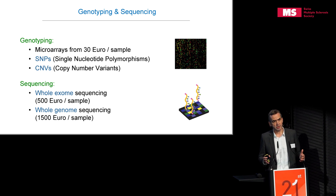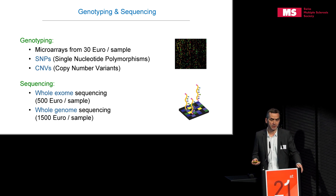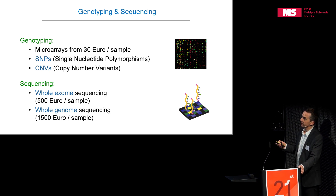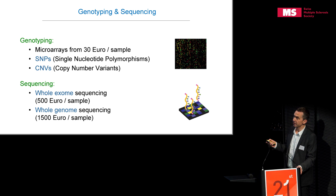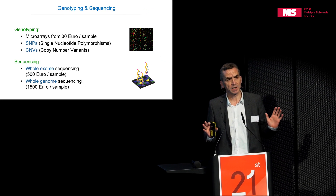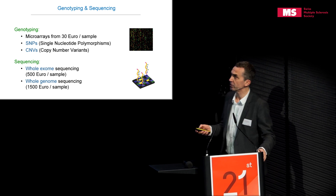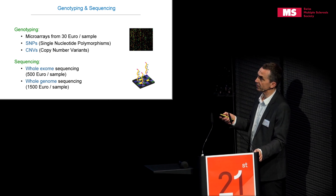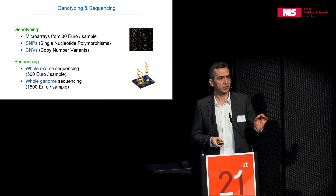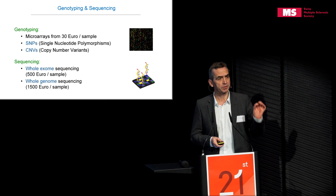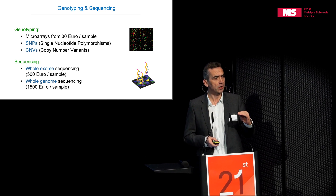Advances in genetic research came through advances in technology. There are two major technological steps that have driven the field. One is the introduction of genotyping more than 10 years ago using microarrays, which allow you to type those variations. The chips currently used comprise between 500,000 and 1 million variations in the genome that can be tested in a single patient, and they also test for copy number variations. This technology is now very cheap — typing one patient costs 30 euros — and is extremely precise across laboratories.